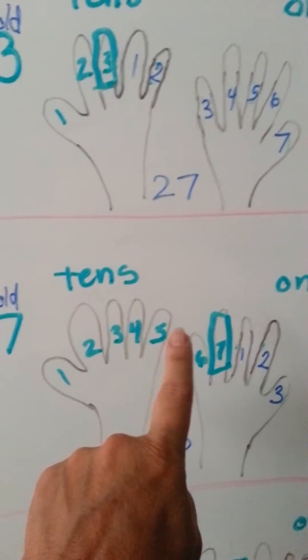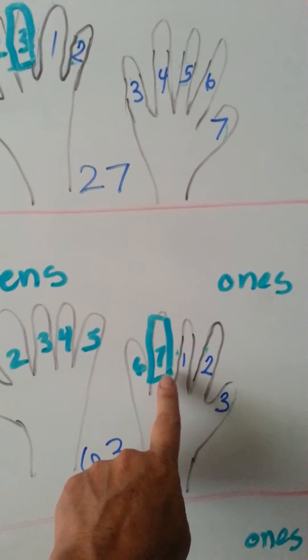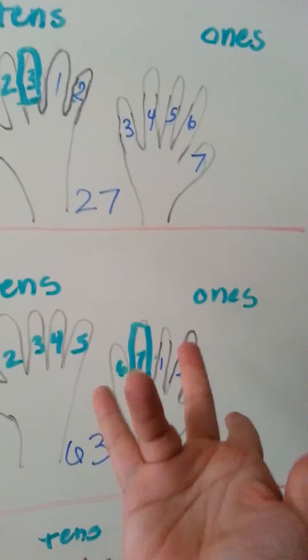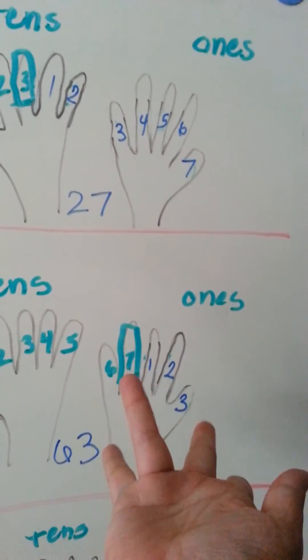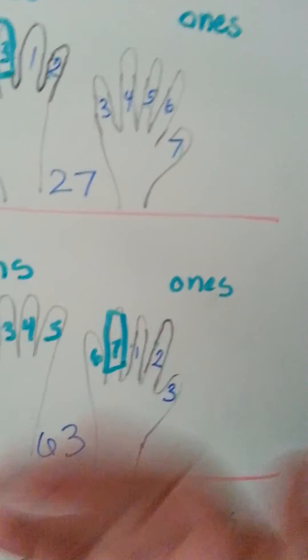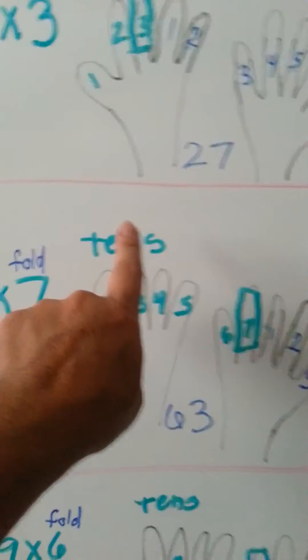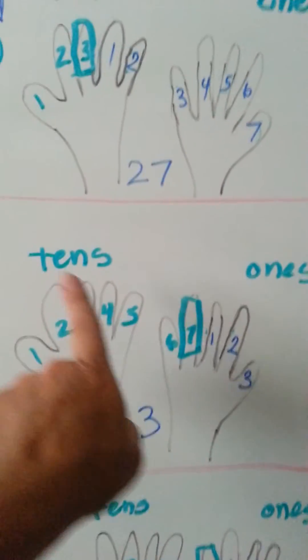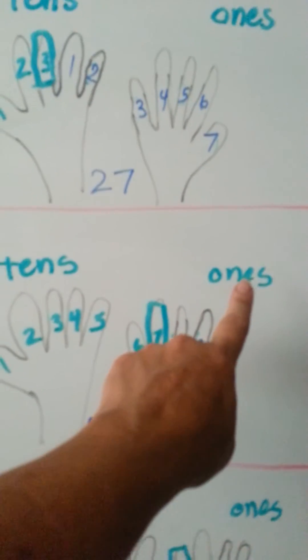1, 2, 3, 4, 5, 6, 7. So, you would be folding this finger. So fold it the best you can. This side is the tens of the fold, and this side of the fold is the ones.